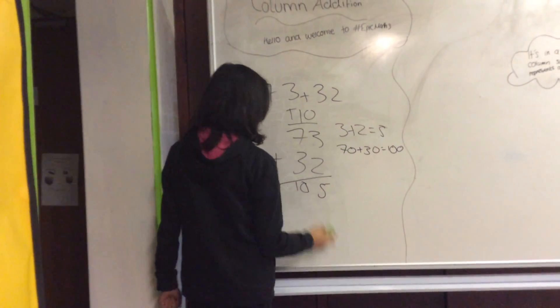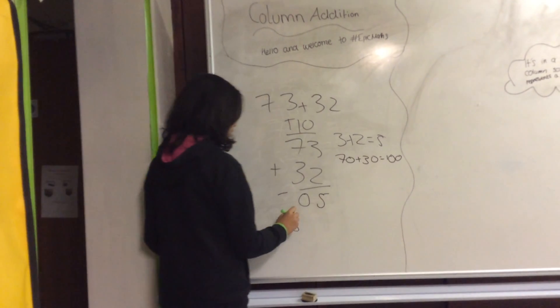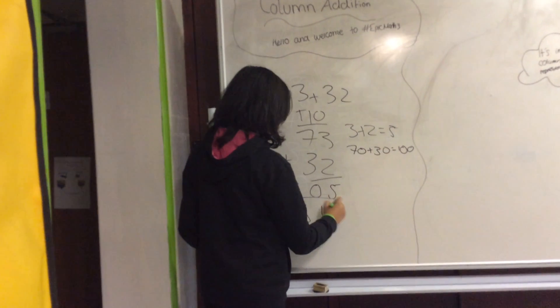You don't put 10 like that. You put the 0 there and carry the 1 here. But because there are no more numbers to add, you put the 1 there. That is the answer of 105.